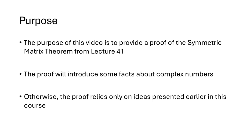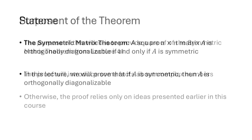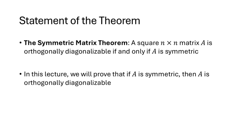The purpose of this video is to provide a proof of the symmetric matrix theorem that we saw in Lecture 41. It says that a square n by n matrix A is orthogonally diagonalizable if and only if A is symmetric. In Lecture 41 we proved that if A is orthogonally diagonalizable then A is symmetric, so in this lecture we're going to prove the reverse: that if A is symmetric then A is orthogonally diagonalizable.